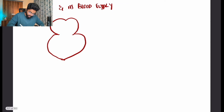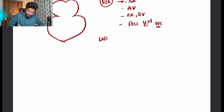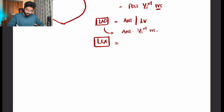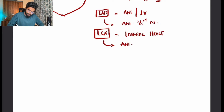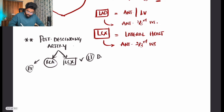The right coronary artery supplies the SA node, AV node, right atrium, right ventricle, and posterior one-third of the ventricular septum. The left anterior descending artery, a branch of the left coronary artery, supplies the anterior part of the heart and anterior two-thirds of the interventricular septum. The left circumflex artery supplies the lateral part of the heart. The posterior descending artery supplies the inferior part.